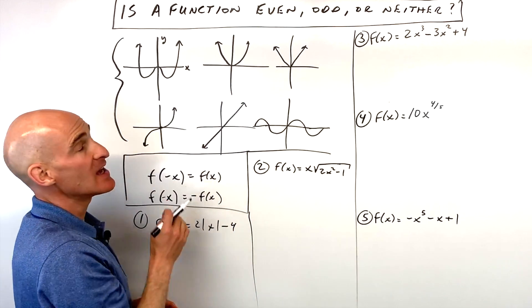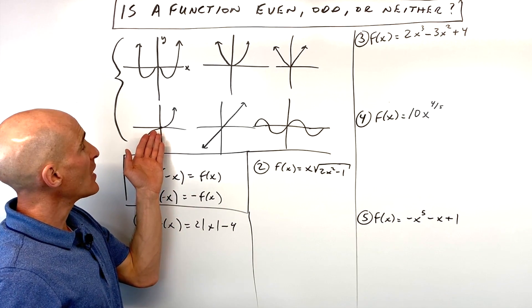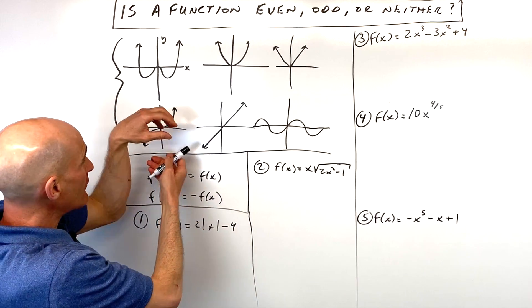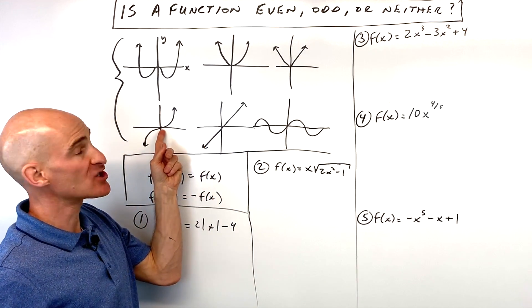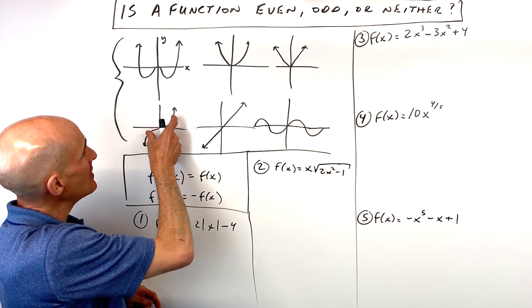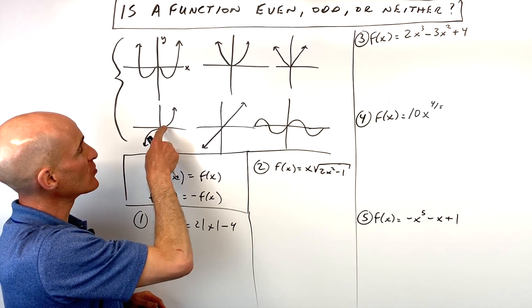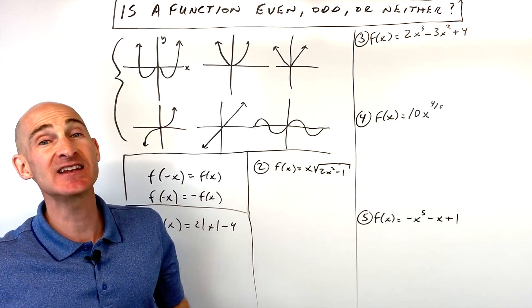Reflection over the y-axis, that's how you test. With odd functions, you want to see if it's 180 degree, like a half turn rotation about the origin. If you rotate this y equals x cubed graph around the origin, 180 degrees, it will match with itself. That tells us that it's an odd function.